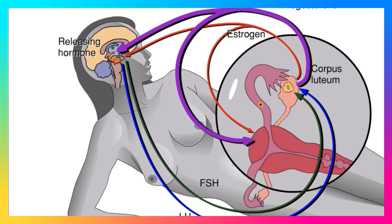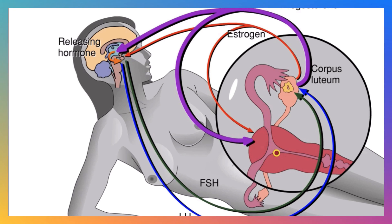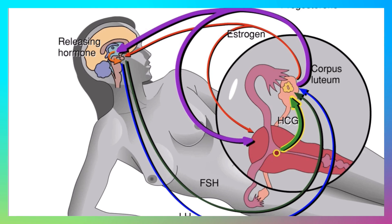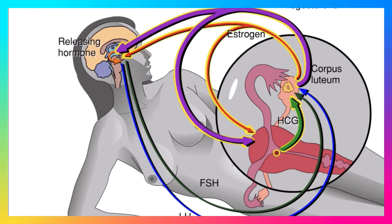If the egg is fertilized, it starts to develop and implants in the wall of the uterus. The embryo secretes a hormone called human chorionic gonadotropin, HCG for short. HCG functions like LH to signal the corpus luteum to continue its secretion of estrogen and progesterone. Later, the placenta takes over this function.